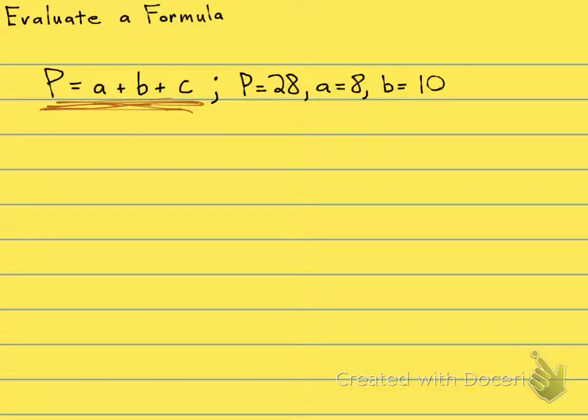Now it tells us the perimeter, the P. It tells us the side A, and it tells us the B. It does not tell us the C.